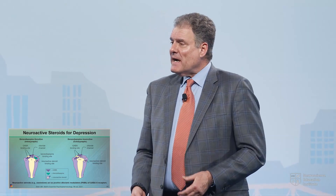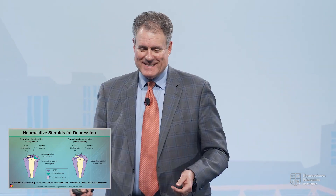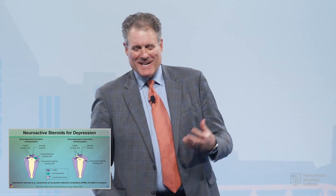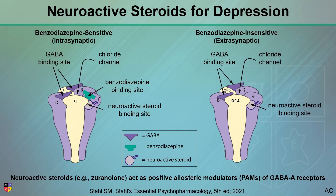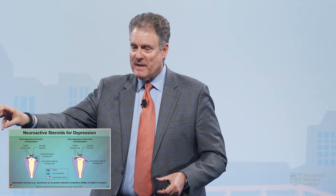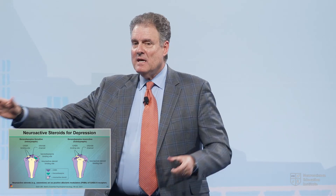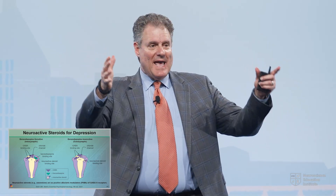We've heard a lot about glutamate. Let's talk about the yin to glutamate's yang — let's talk about GABA. GABA receptors come in a couple of flavors. We have GABA-A receptors, which are ion channels, and GABA-B receptors, which are metabotropic. We're not talking about GABA-B today — we're focusing on GABA-A.